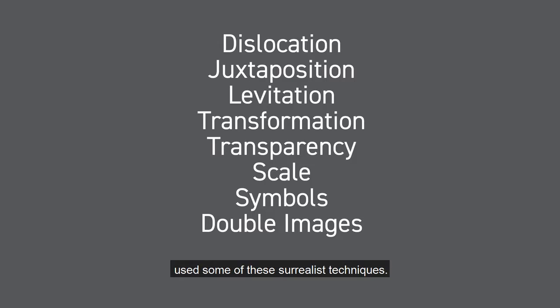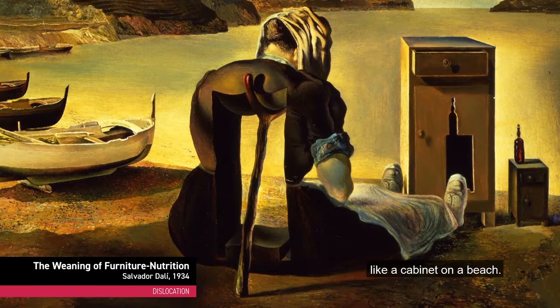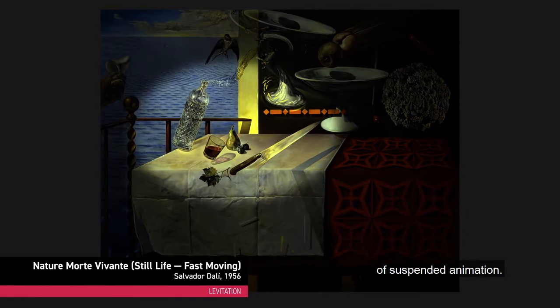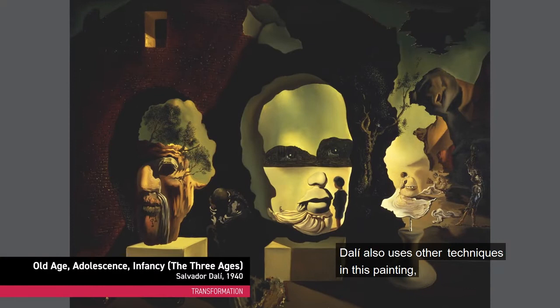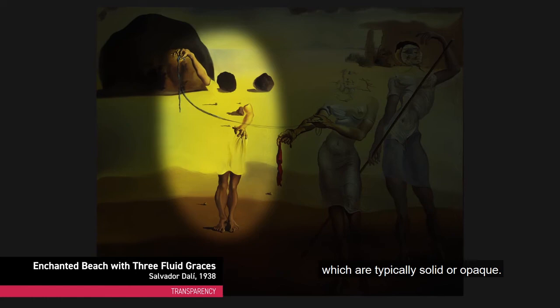Dislocation places items where they don't typically belong, like a cabinet on a beach. Juxtaposition puts things together that don't normally go together. Levitation creates the appearance of suspended animation. Transformation shows something in the process of change, such as a child becoming an adolescent and growing to an old man. Dali also uses double images to create a visual puzzle. Transparency makes it possible to see through objects which are typically solid or opaque. Scale changes the way we think about an object's normal size. Many surrealists use more than one technique, and they all contribute to the dreamlike feel of the completed work.